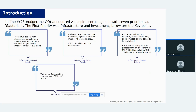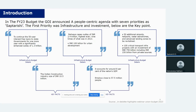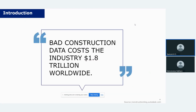Now let's look at a few key facts about the construction industry in India. It is sized at INR 10.5 trillion, accounts for around 8% of the nation's GDP, and employs around 57.5 million people. This illustrates the magnitude at which the Indian construction industry is growing and why technology adoption is needed to reduce risk, wastage, and deliver a better built environment. Another key fact: bad construction data costs the industry 1.8 trillion dollars worldwide, and data is the bedrock of our core topic — digital twins.